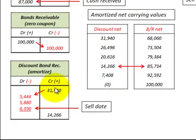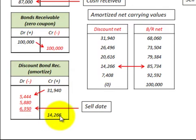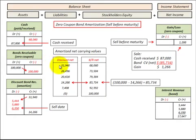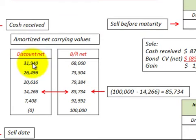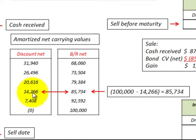If we look at the discount to bonds receivable, we've amortized it down to a net carrying value of $14,266. So we've amortized the discount from $31,940 down to a balance of $14,266 at the time we sold this bond, and we've increased the carrying value of the bond from $68,060 up to $85,734.